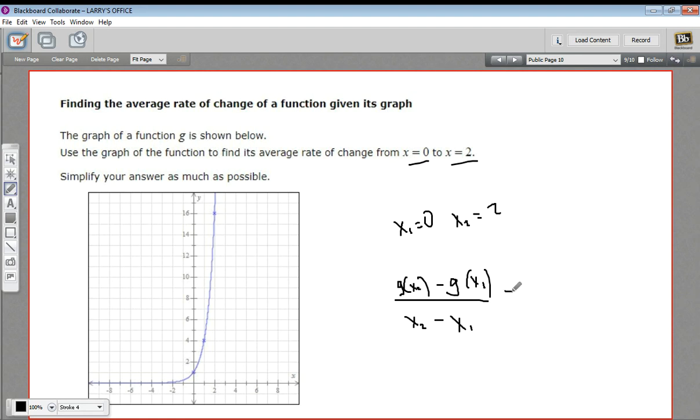Let's plug those in. The bottom is easy: x₂ is 2 and x₁ is 0, so we have 2 minus 0 on the bottom. We need to figure out the function values for x₁ and x₂. When x₁ is 0, the function value looks like 1. And then when x₂ is 2, it goes all the way up to 16.